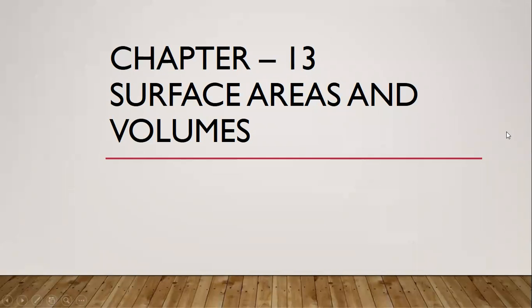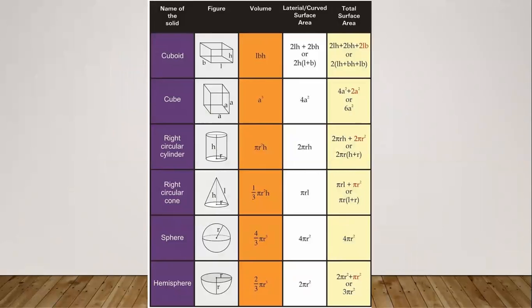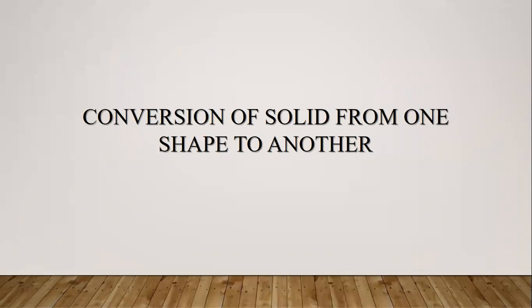Good morning, everyone. In this video, we'll continue with Chapter 13, Surface Areas and Volumes. These are the formulas you've already seen in the previous video for a cuboid, cube, right circular cylinder, right circular cone, sphere and hemisphere — volume, lateral or curved surface area, and total surface area as given in the table. We'll move on to the next topic: conversion of solid from one shape to another. There's going to be a change in shape, and we'll see questions based on that.